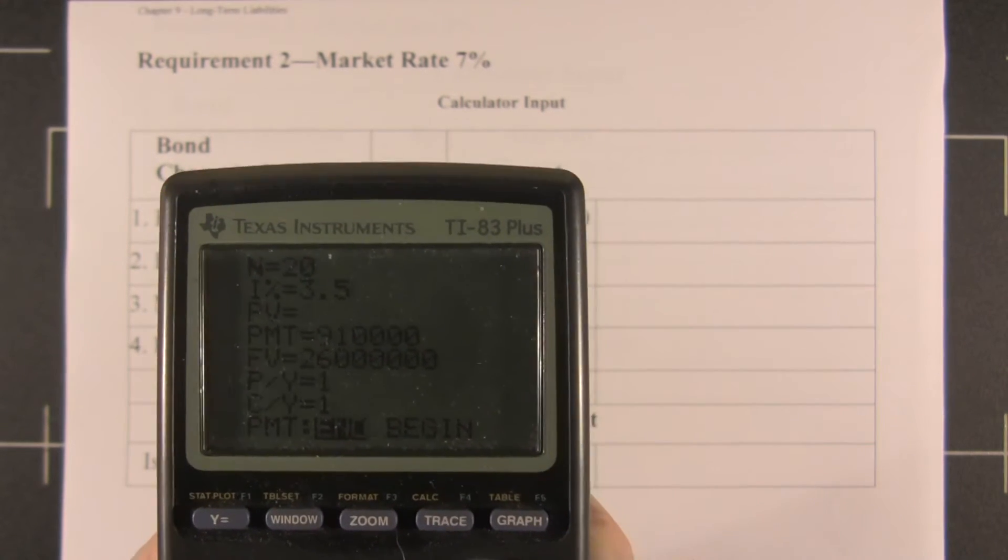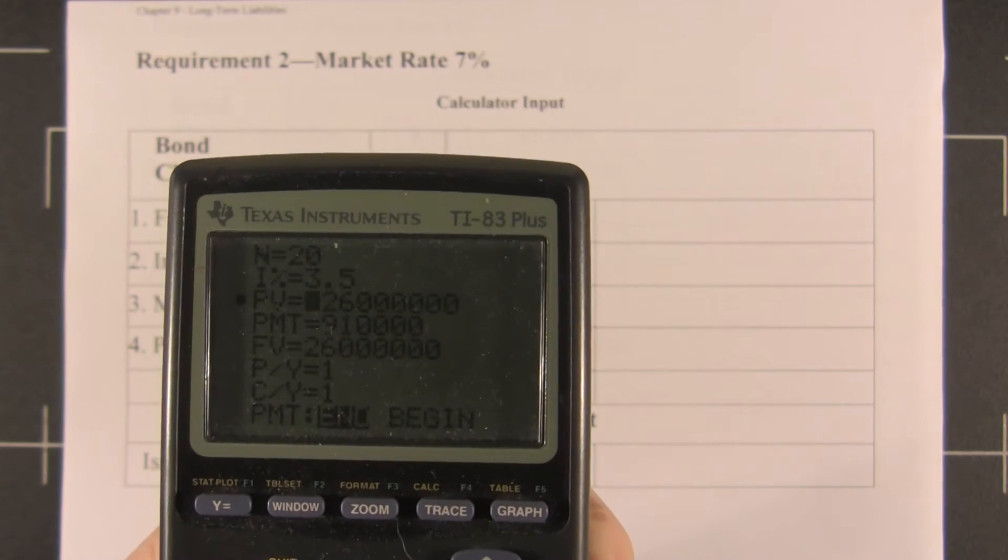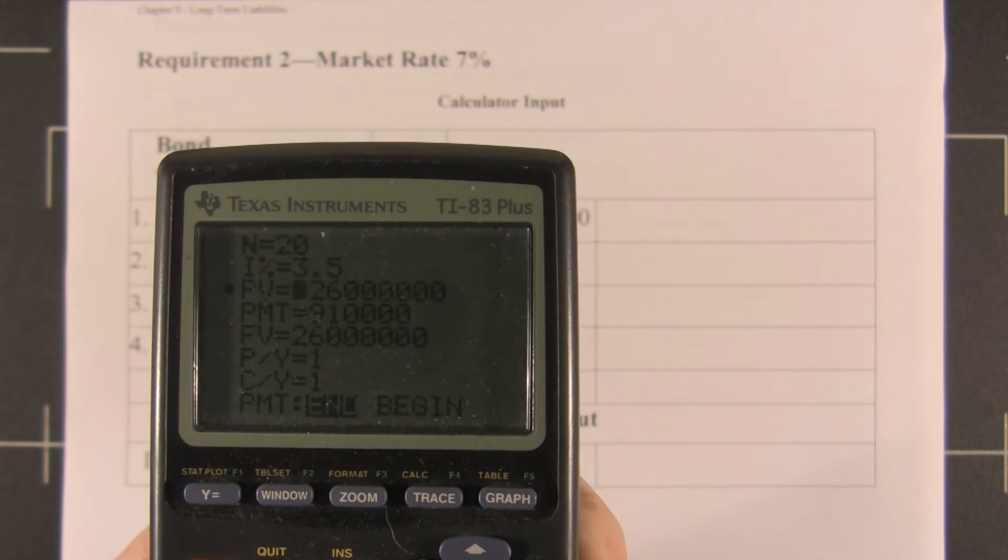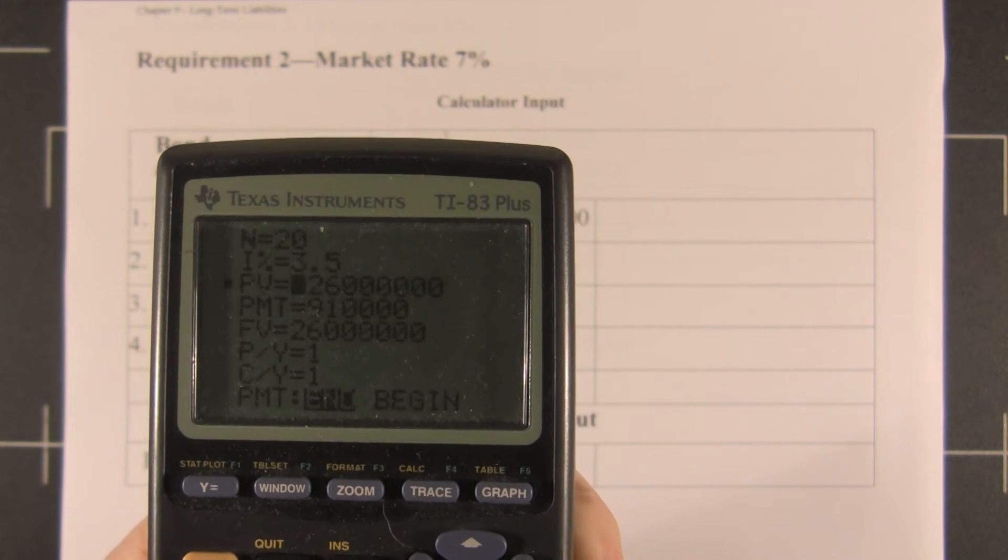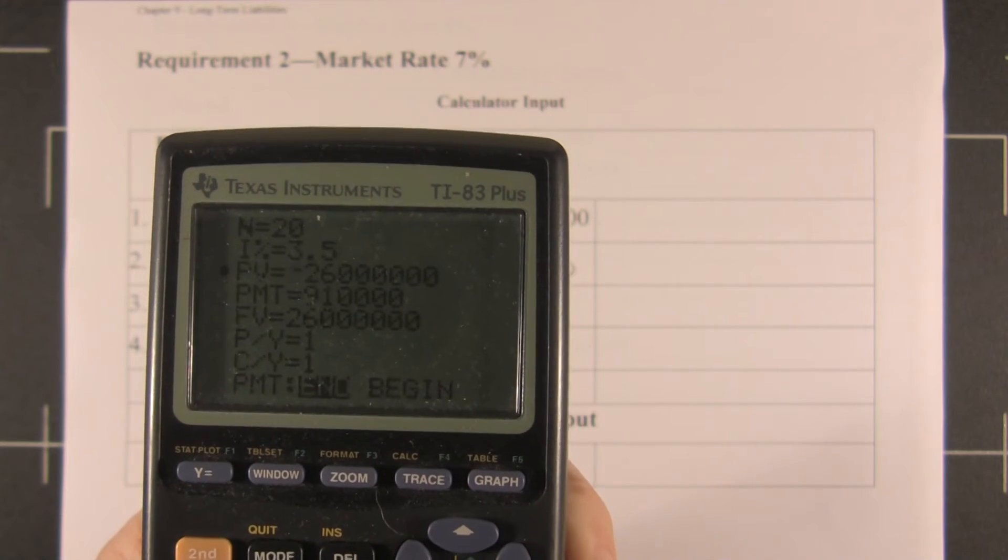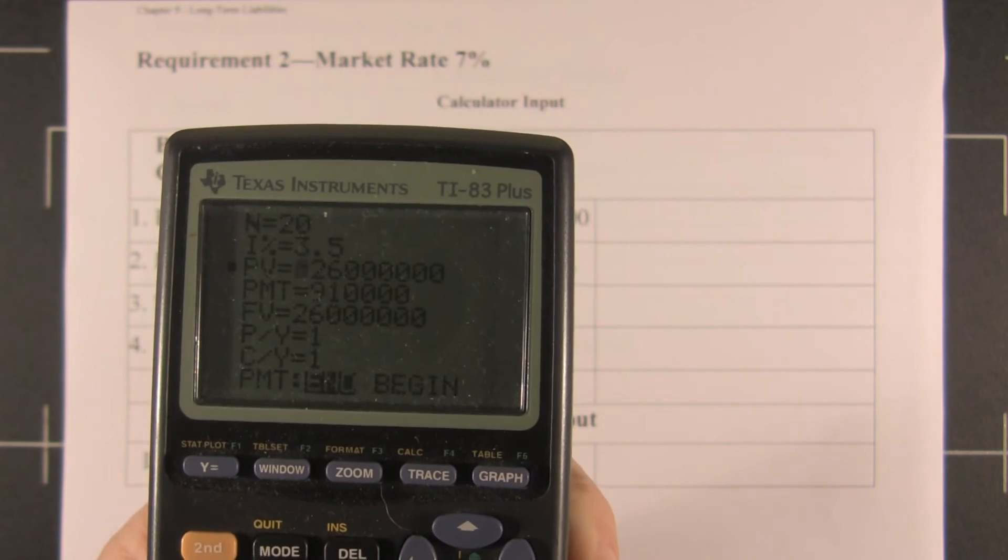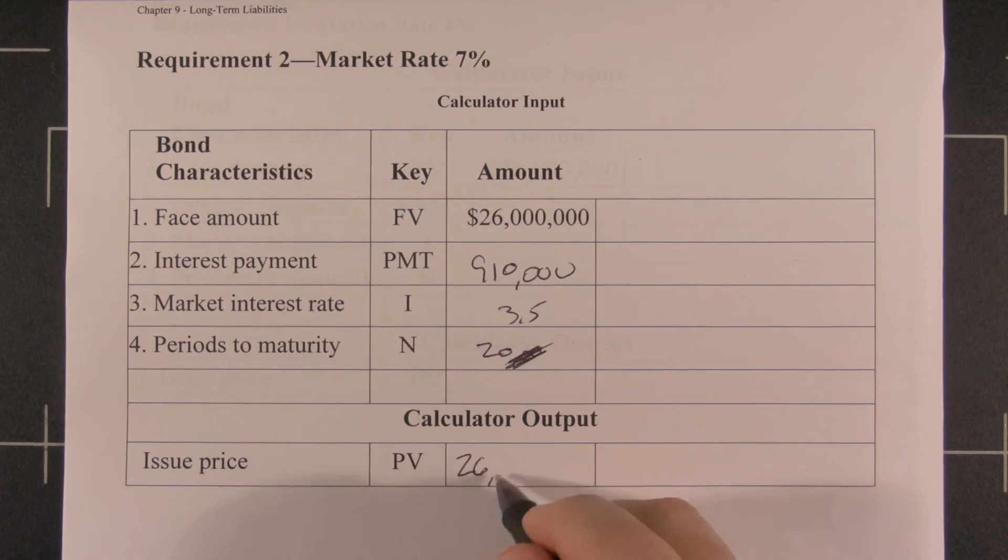I'm looking for PV. I hit enter and it shows me that these $26,000,000 worth of bonds will sell for $26,000,000 because the market rate of interest and my face rate of interest is exactly the same. So my issue price would be $26,000,000.